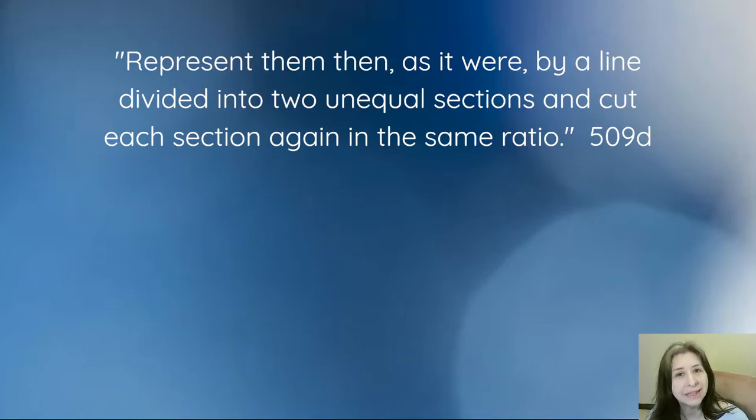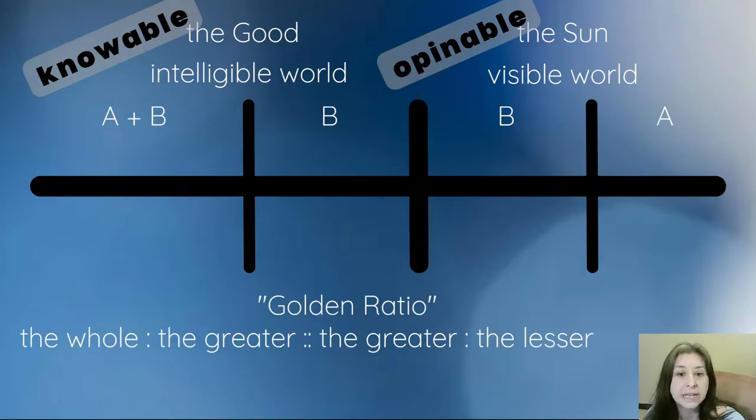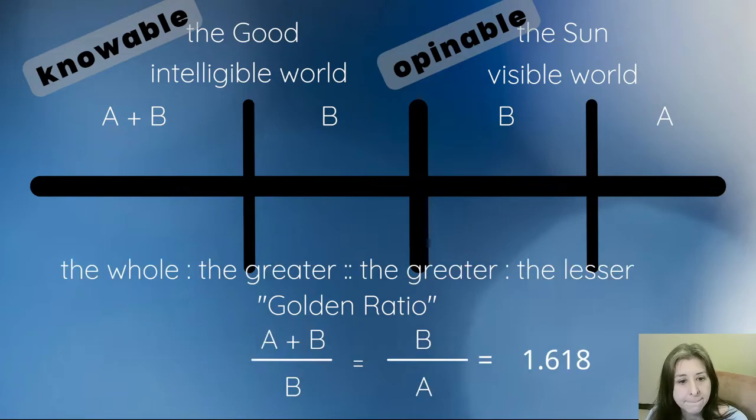He says, represent them by a line divided into two unequal sections, and cut each section again in the same ratio. So now we have something that looks like this. This is known as the golden ratio. Basically, it's that the whole is to the greater as the greater is to the lesser. I'm calling the lesser A because he's going to define these sections starting from A and moving forward. There's A, then B is the greater, and then A plus B would be the whole. Notice that the two middle sections are equal, and that will have significance.